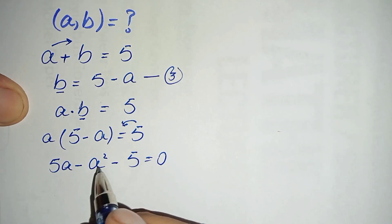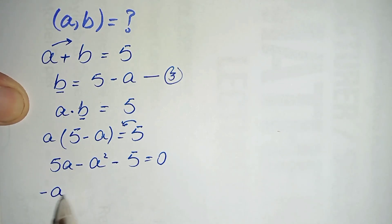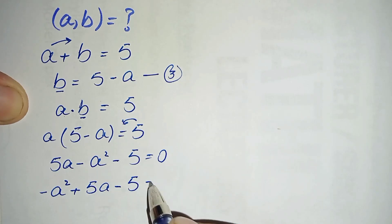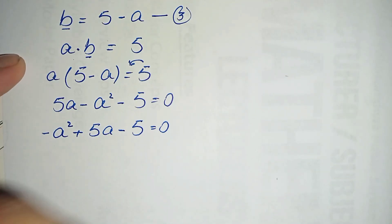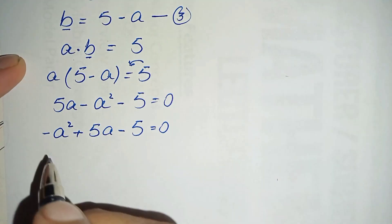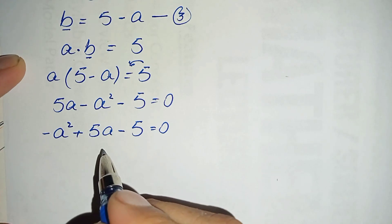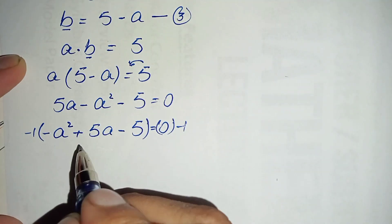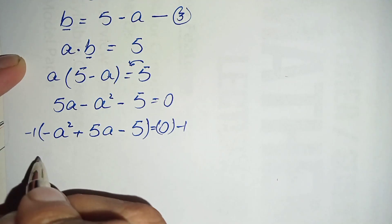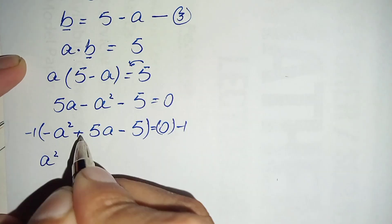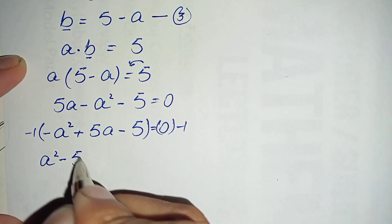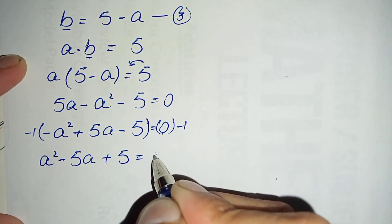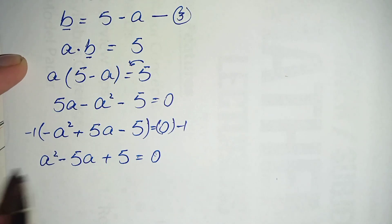Rearranging the terms according to the degree of a gives: minus a² plus 5a minus 5 equals 0. To make the coefficient of a² positive, we multiply the equation by negative one on both sides. The signs of all terms change, giving us: a² minus 5a plus 5 equals 0.